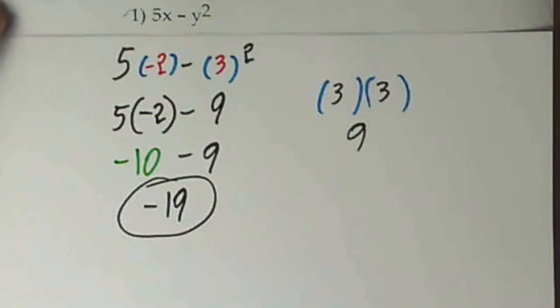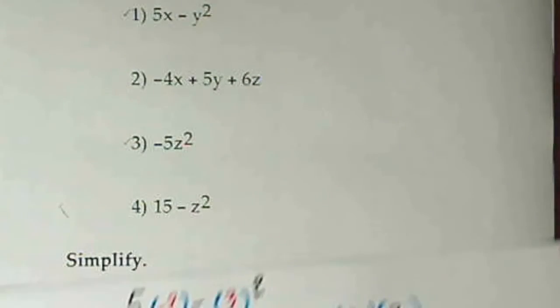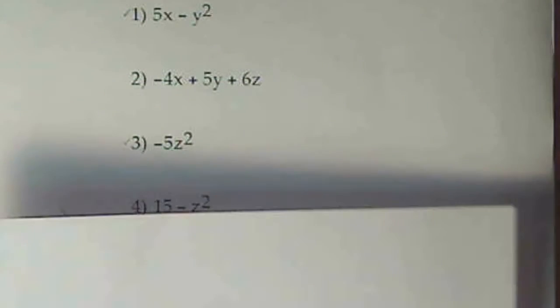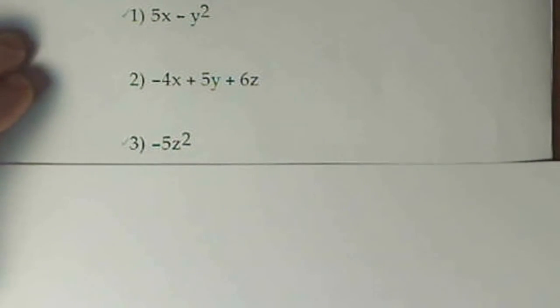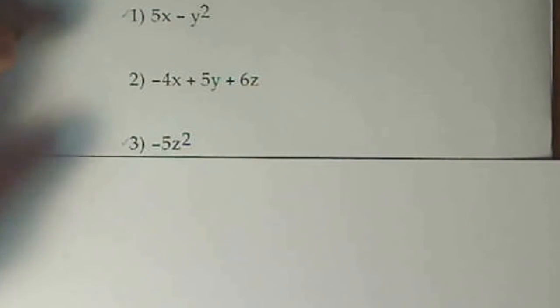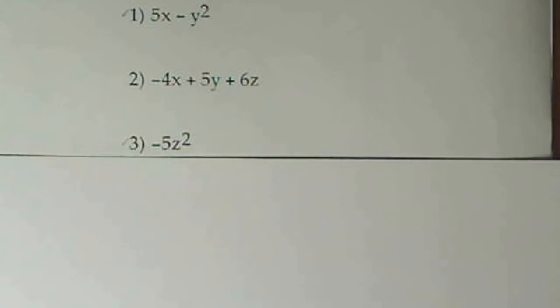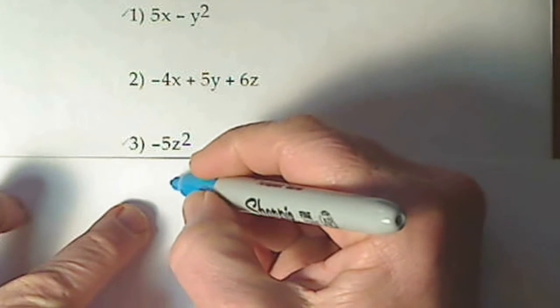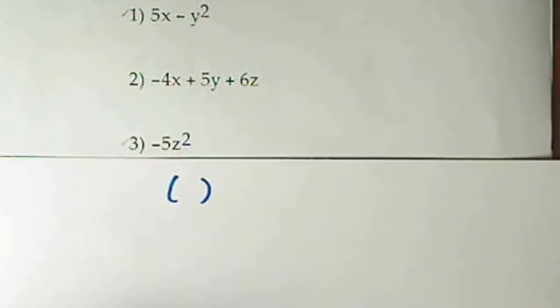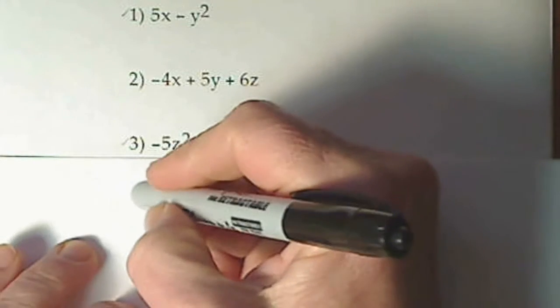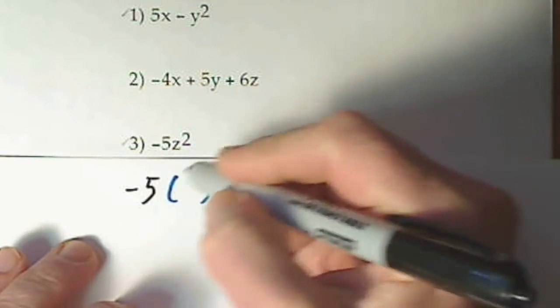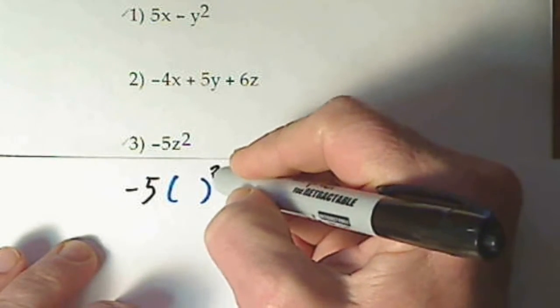Let's take a look at another one. We have number 3 here. Again, I'm going to put parentheses where the variable is, and then just bring everything else down. So we've got our negative 5 and squared.